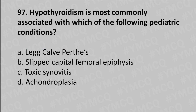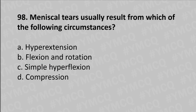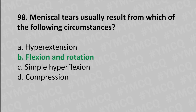Moving to our 97th question: hypothyroidism is most commonly associated with which of the following orthopedic conditions? Option A Legg-Calvé-Perthes disease, option B slipped capital femoral epiphysis, option C toxic synovitis, option D achondroplasia. The answer is option B, slipped capital femoral epiphysis. Moving to our 98th question: meniscal tear usually results from option A hyperextension, option B flexion and rotation, option C hyperflexion, option D compression. The answer is option B, flexion and rotation.